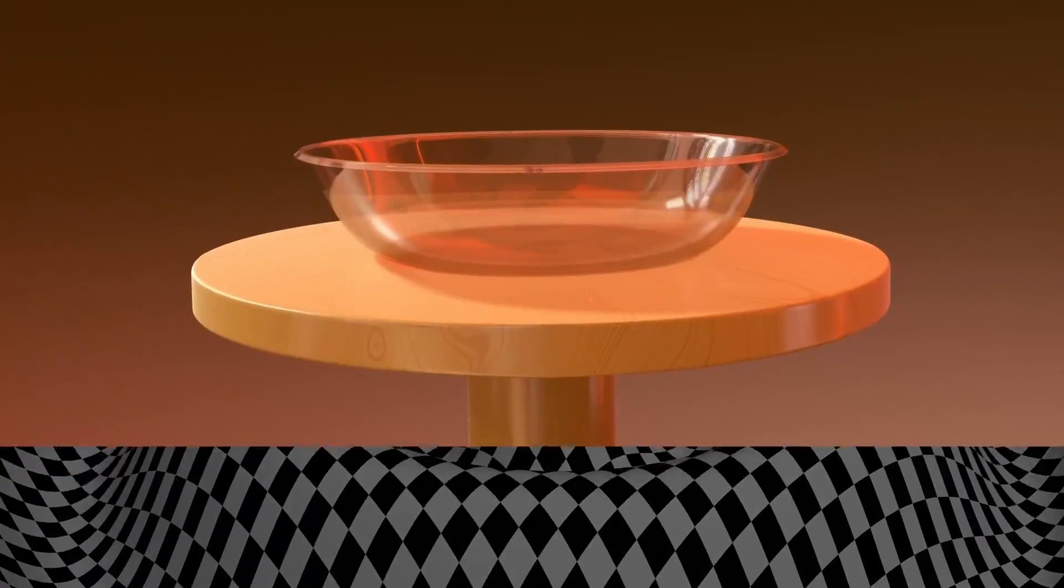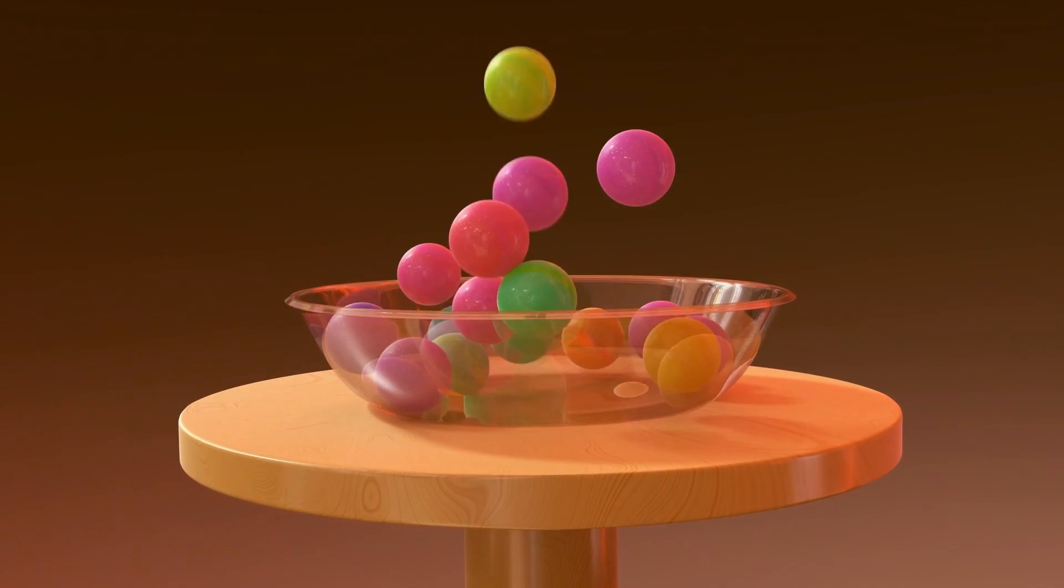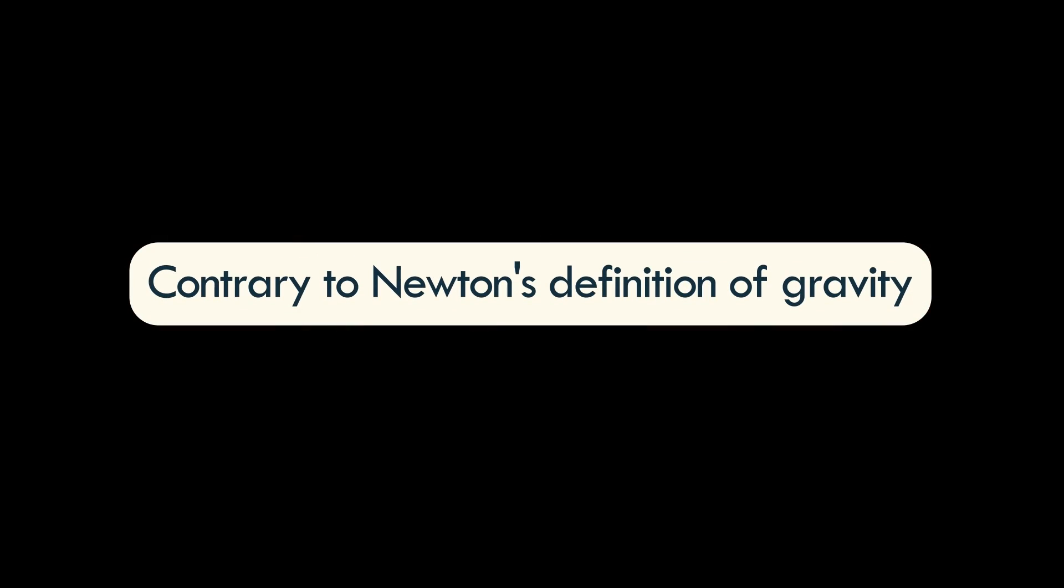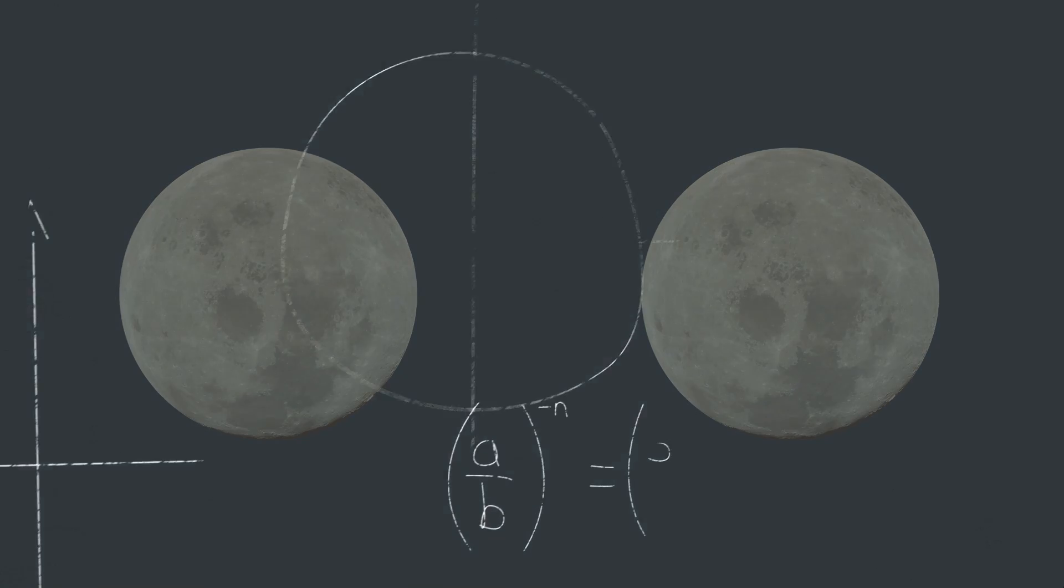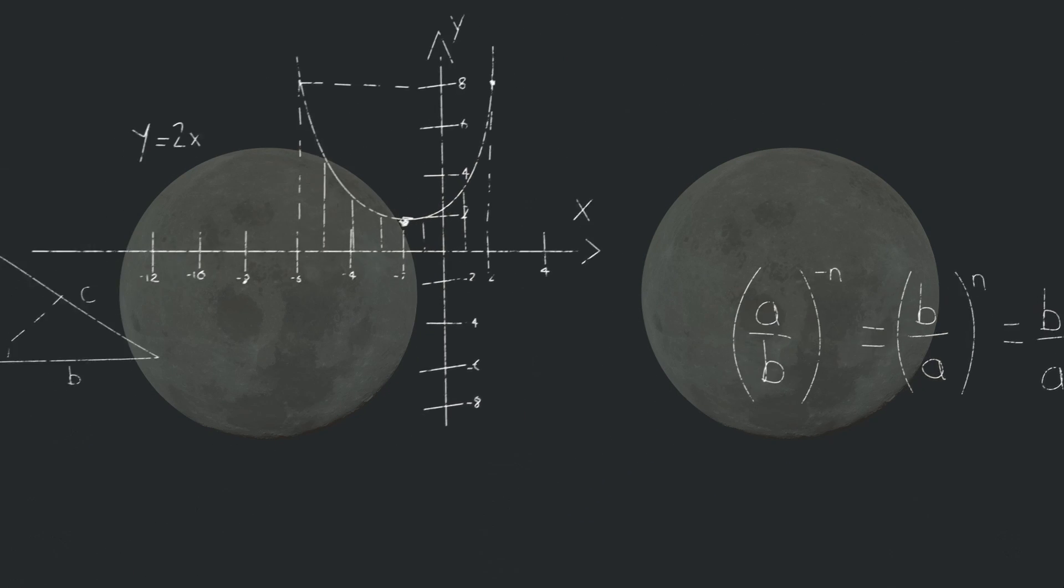Einstein also presented an alternate viewpoint to Newton's traditional definition of gravity. Contrary to Newton's definition of gravity as an attractive force between two objects with mass, Einstein formulated that significant objects in the universe have the capacity to distort space-time.